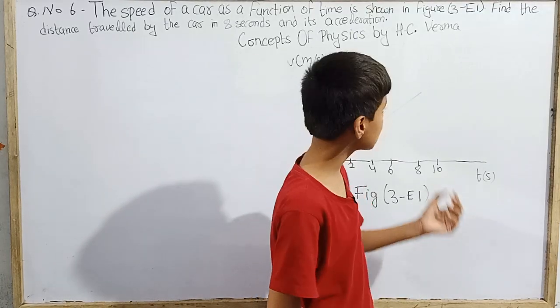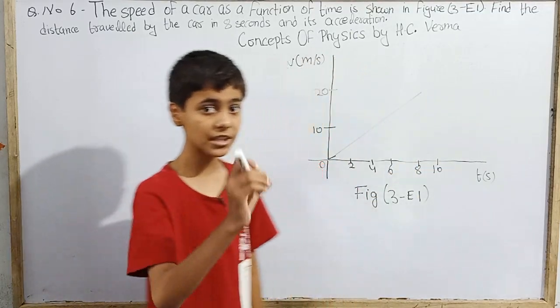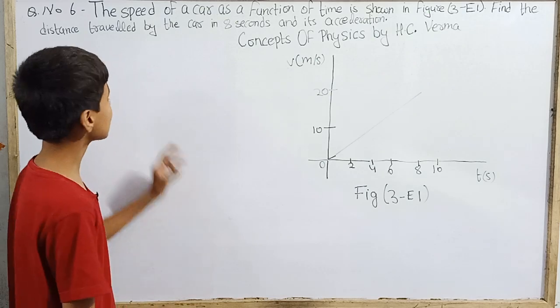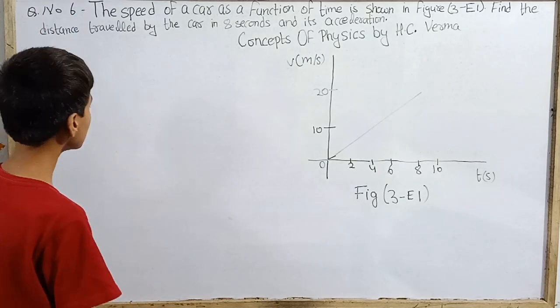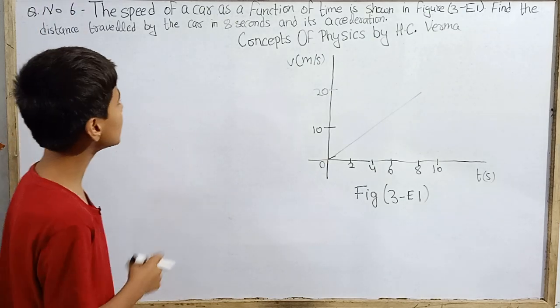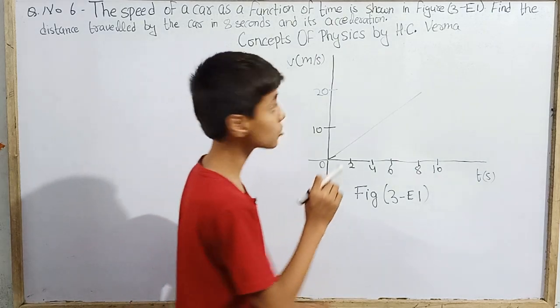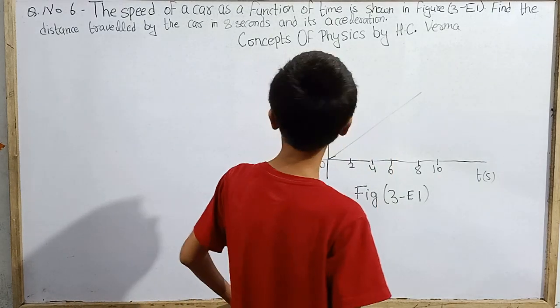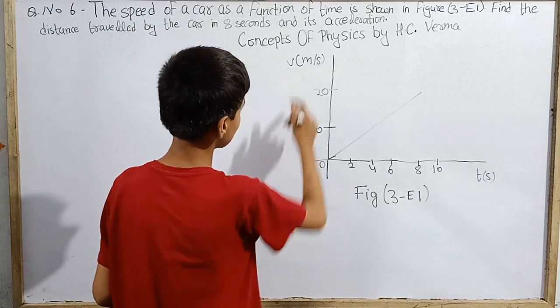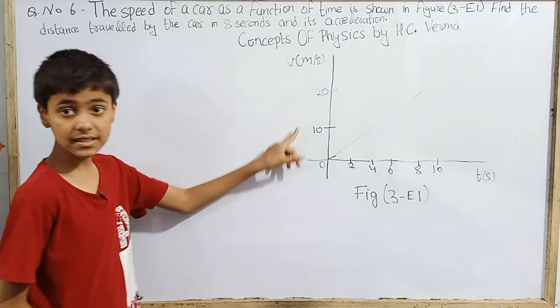Everyone, and today we are back again with concepts of physics textbook written by Professor H.C. Verma. Kinematics, question number 6, which is: the speed of a car as a function of time is shown in figure 3E1. Find the distance travelled by the car in 8 seconds and its acceleration.